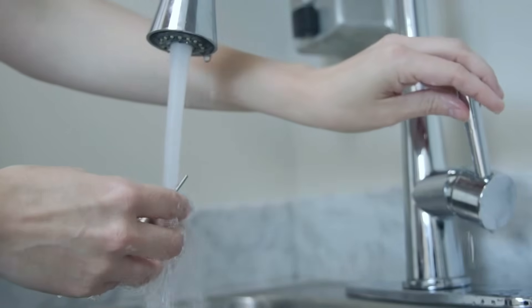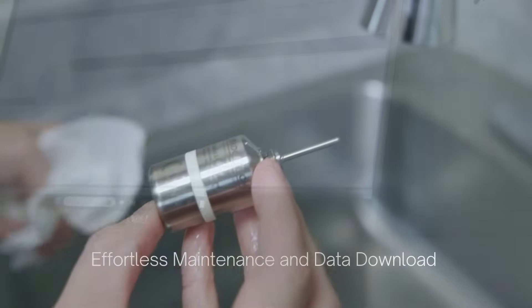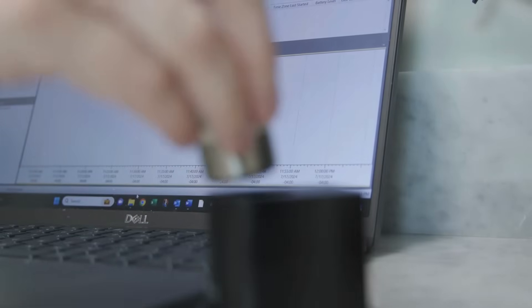After data collection, simply remove the HITEMP 140-CF from the can, give it a quick rinse and wipe down, and then download your data onto MAJTEC 4 software.